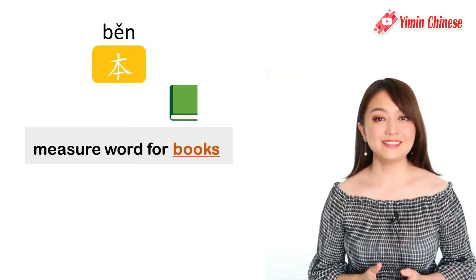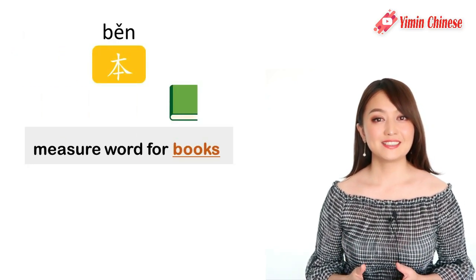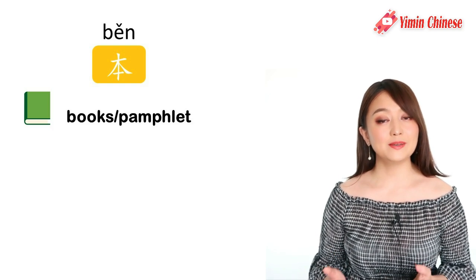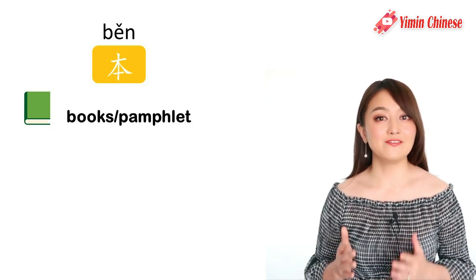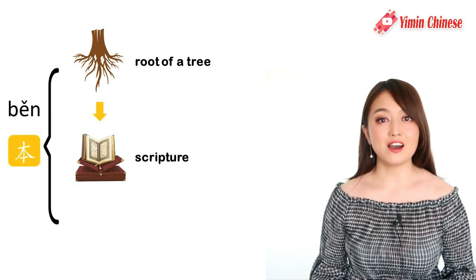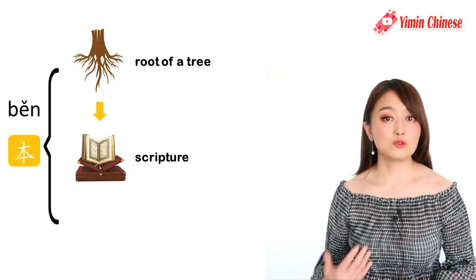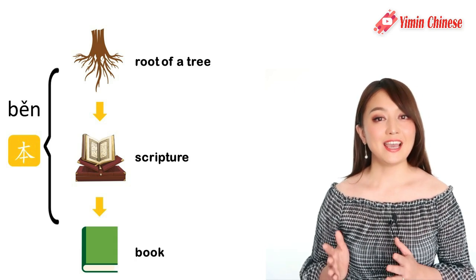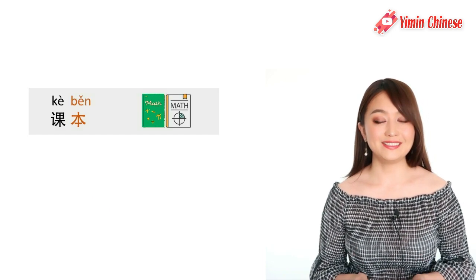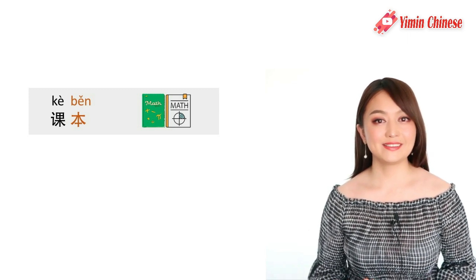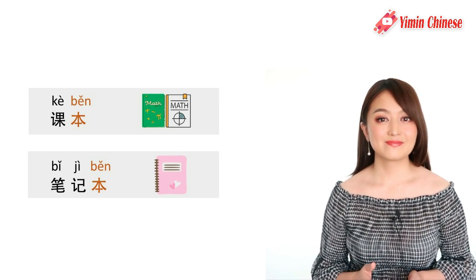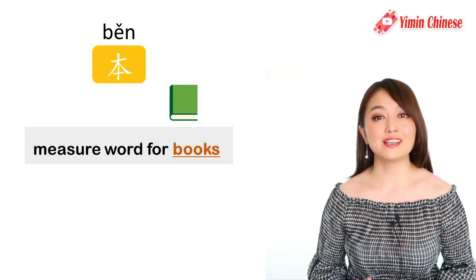The next measure word is 本 (běn). It's the measure word for books. 一本书, a book. 本 itself is a noun meaning book. Originally, the very first meaning of 本 is the root of a tree. Then it extended to the meaning of scripture — like the root of a spirit — and later extended to the meaning of book. We can see 本 in words like 课本, textbook, or 笔记本, notebook. That's why 本 is chosen as the measure word for books.